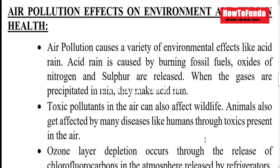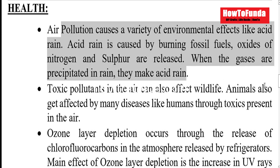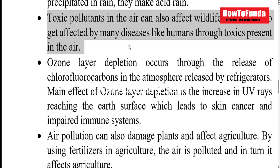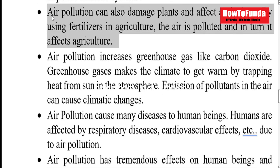Now we will try to understand the effects of air pollution on our environment and human health. Air pollution causes a lot of environmental hazards as well. Because of air pollution, we get acid rain, which occurs whenever fossil fuels like petrol and other gases are burned. These toxic pollutants can also harm wildlife — animals are impacted similarly to human beings. There is also depletion in the ozone layer, which causes more UV rays to reach the surface of the earth, leading to huge health challenges for both humans and animals. Air pollution also damages plants and affects agriculture.